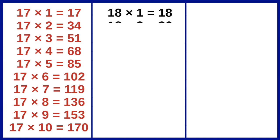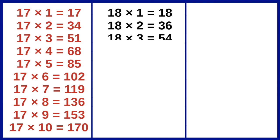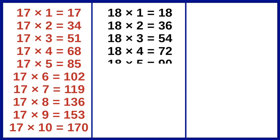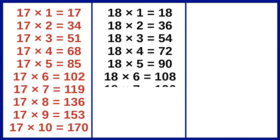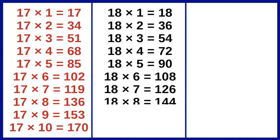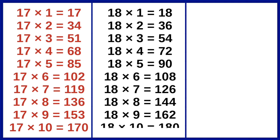18×1=18, 18×2=36, 18×3=54, 18×4=72, 18×5=90, 18×6=108, 18×7=126, 18×8=144, 18×9=162, 18×10=180.